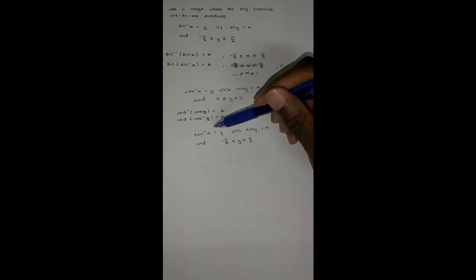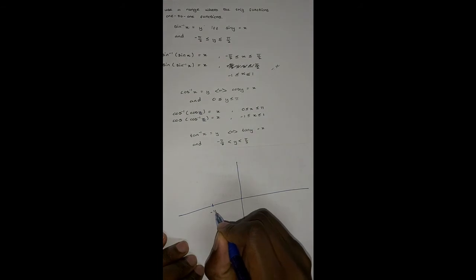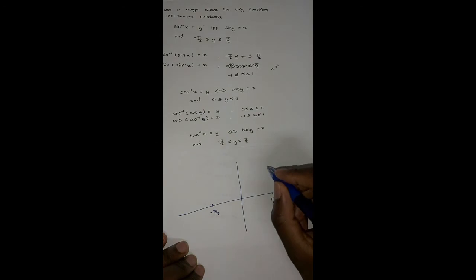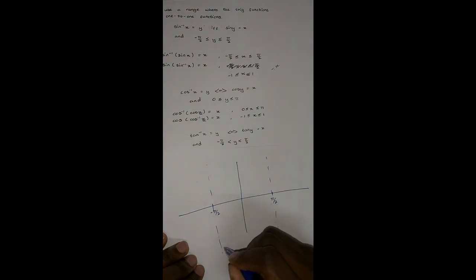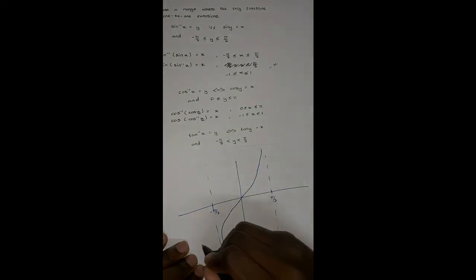For arctan: arctan(x) equals y if and only if tan(y) equals x, and we use the range negative pi over 2 to pi over 2, not inclusive. I'll plot the graphs of tan(x) and arctan(x). The graph of tan(x) on the range negative pi over 2 to pi over 2 looks like a standard tangent curve. We then reflect this about the line y equals x.